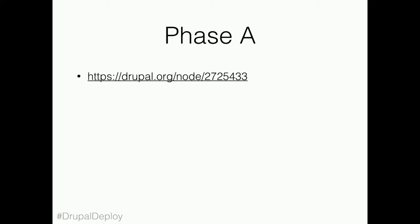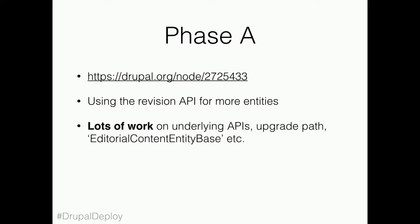The first phase, also aligned in the issue queue, is we want to introduce the revision API for more entities in core. At the moment, it's only the node entity and blocks that have revisions on them. In order to do any sort of moderation or workflows, we need revisions everywhere. This was one of the very first things that we're doing, and there's a lot of work in this very first phase — a lot of underlying APIs, not necessarily visible to anyone. We're working on an upgrade path, because if we're enabling revisions on content entities that don't have them, we need to be able to upgrade to that within the cycle of Drupal 8.